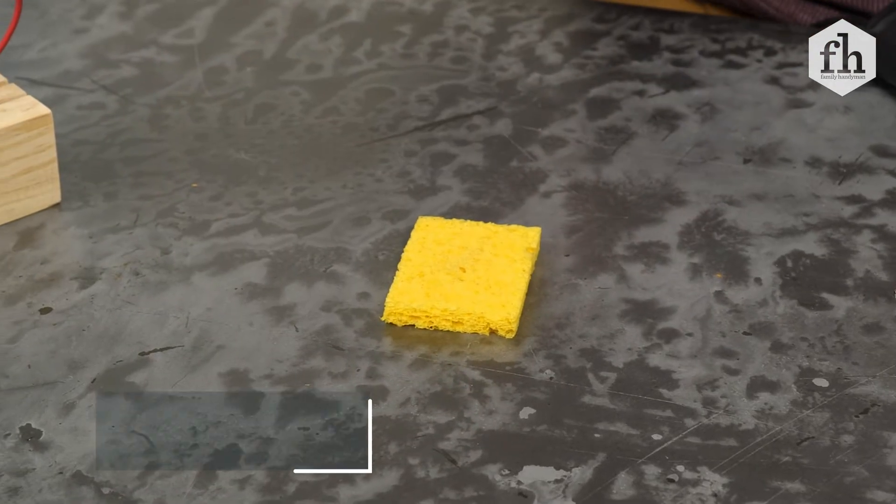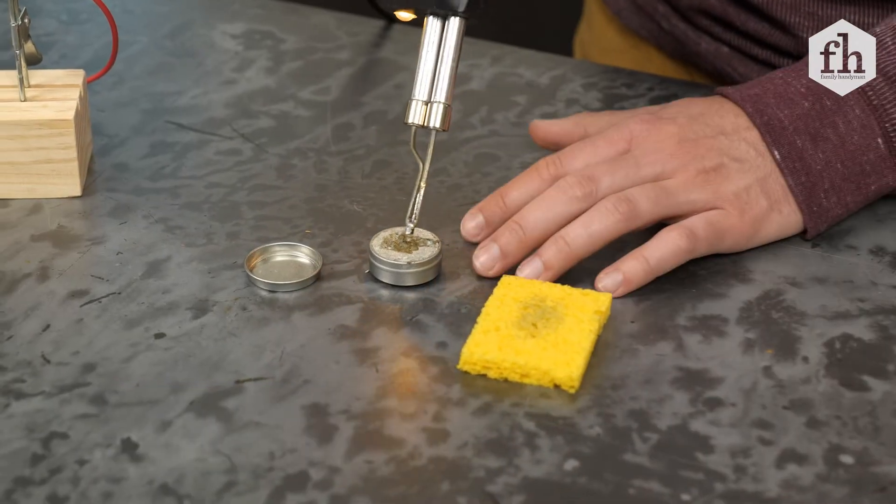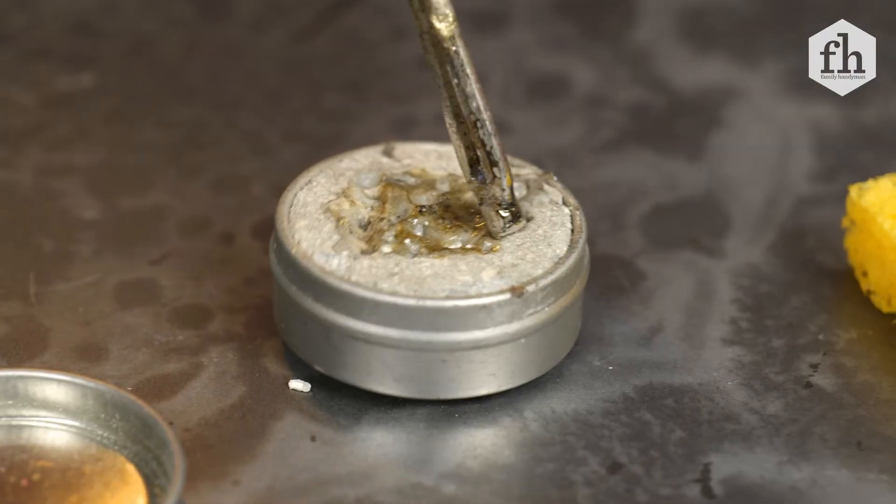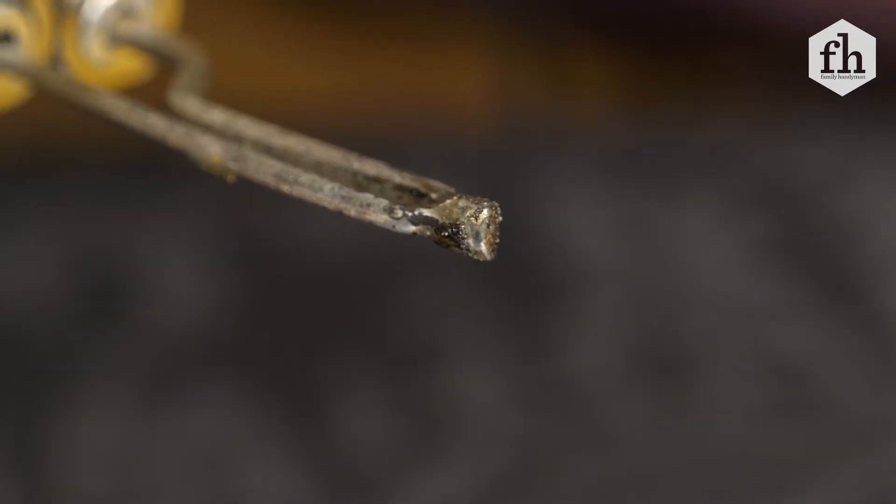Dampen a sponge with water, then heat up the soldering gun and wipe off the tip with the sponge. Tint the tip of the soldering gun with a soldering tip tinner to prevent oxidation. When the tip is bright and shiny, the tip is ready for soldering.